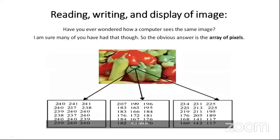Since this is an RGB image, it has three channels. The first channel is for R, the second is for B, and the third is for green — RGB stands for red, green, and blue. This part of the image has these pixel values.